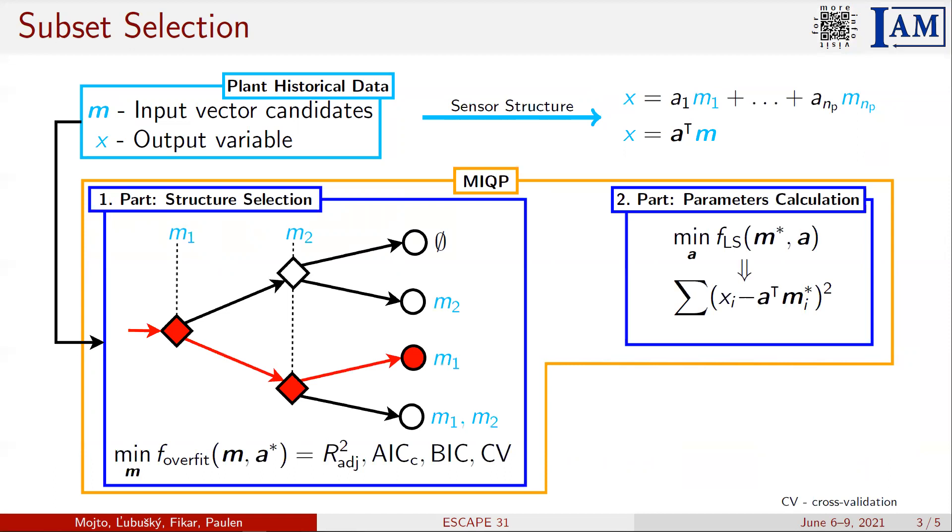The subset selection method iterates between these two parts until the optimal structure and parameters of the inferential sensor are calculated.